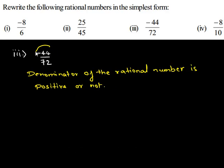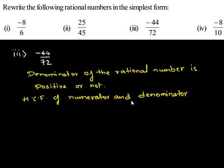So we have here negative 44 upon 72. The denominator is 72, which is a positive number. Then we have to find the HCF of absolute values of numerator and denominator. Let us first write the factors of absolute values of numerator and denominator, that is 44 and 72.